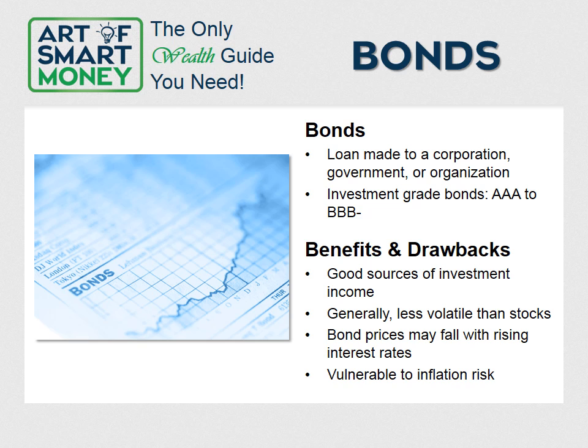Bonds issued by the U.S. Treasury are considered to be risk-free since there is virtually no chance that the government will fail to pay back your initial investment — they can just print money. However, safety and stability come at a cost because there is little risk involved, there is little potential return on highly rated bonds. Some government bonds are giving less than 1%, and if inflation is 2-3%, you're actually losing money over the long haul.